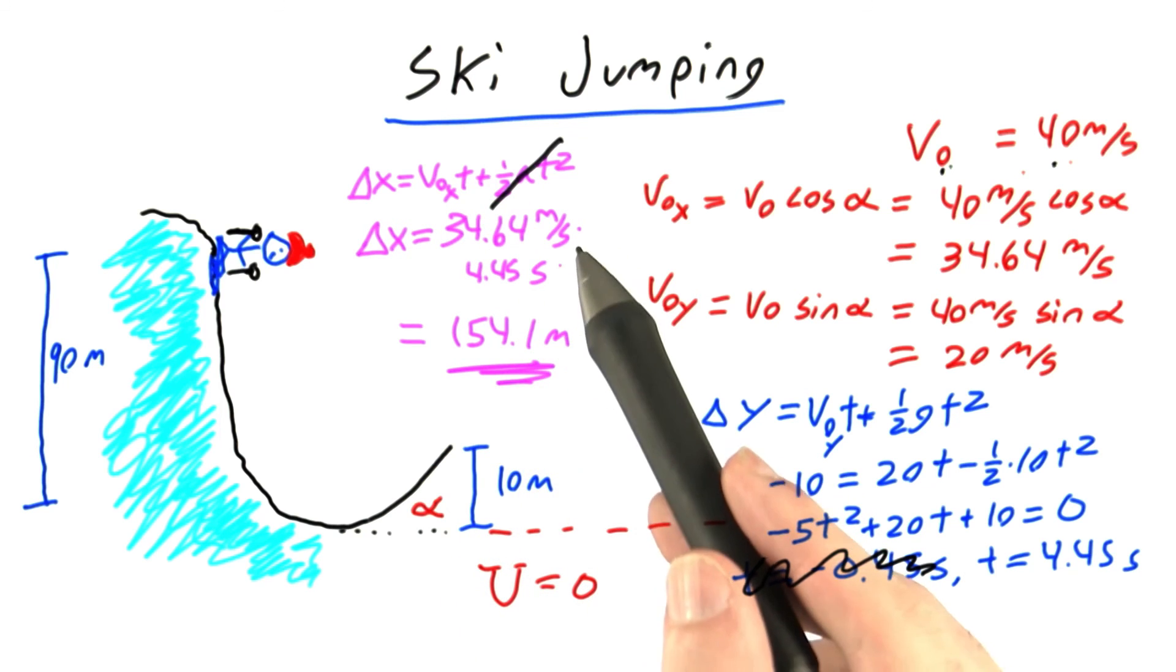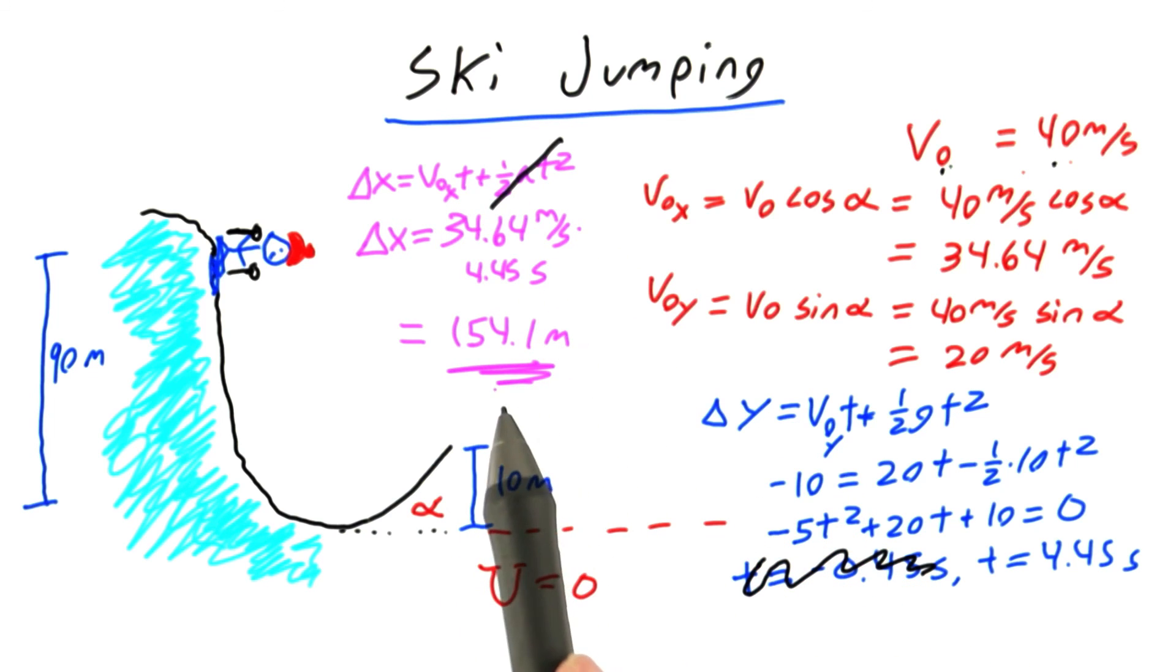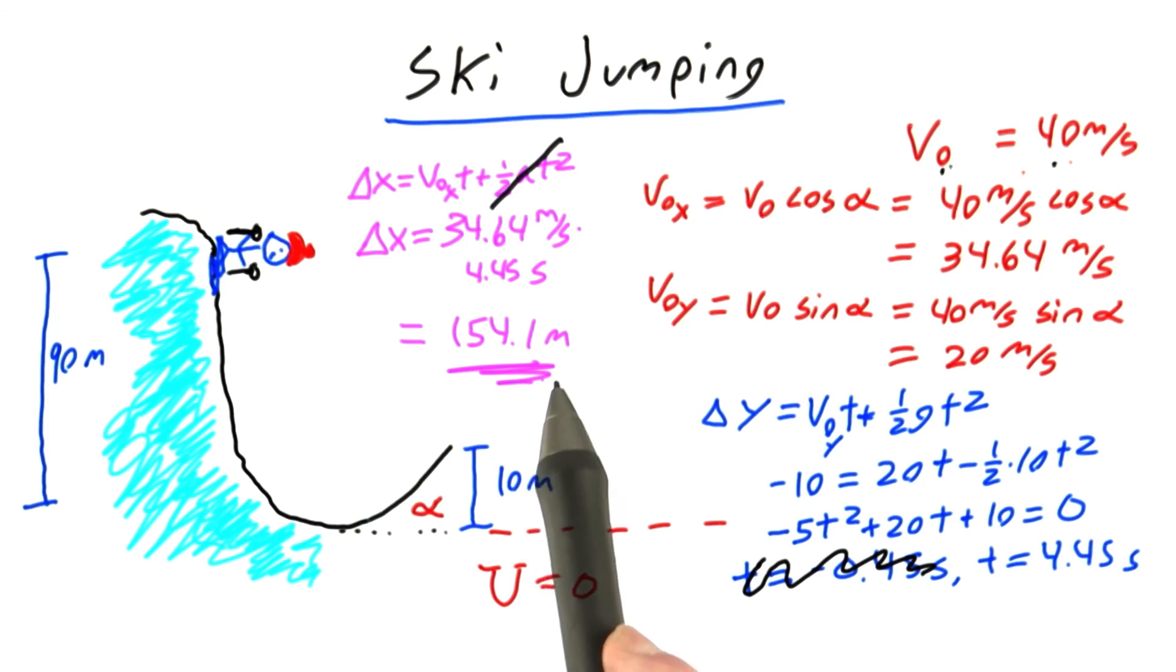Plugging in the numbers we were given, we get that the final change in x, the distance d that the skier lands away from the ramp, is 154.1 meters. If you got this answer, great work.